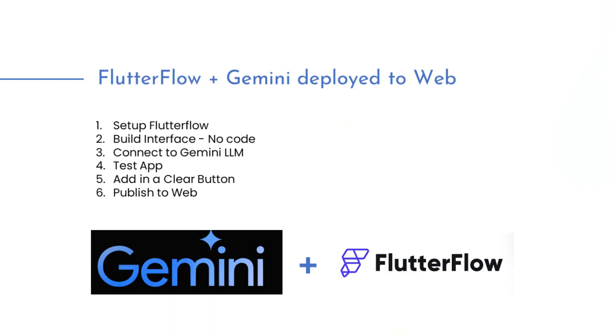Your first Flutter Flow app with Gemini linked up has never been simpler. What I'm going to do today is walk you through how to build a minimum viable product or MVP, just to test out a use case using a quick interface on Flutter Flow, connect it up with Gemini's large language model or chatbot, and ultimately publish it to the web. It's going to be a fully functioning chatbot which you can use and test in your environment.